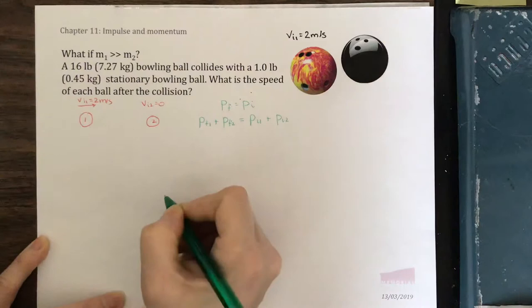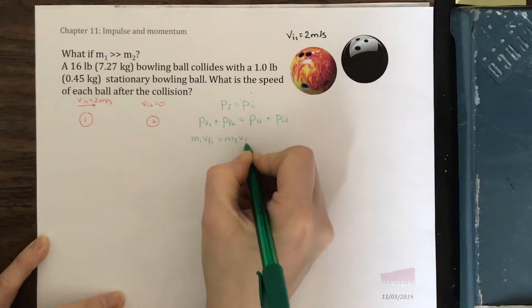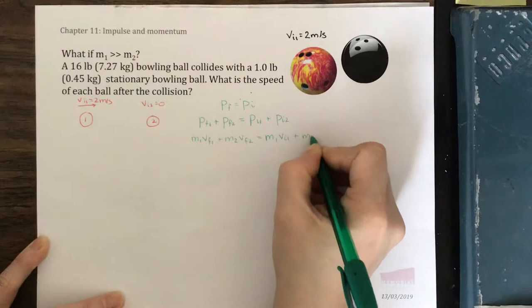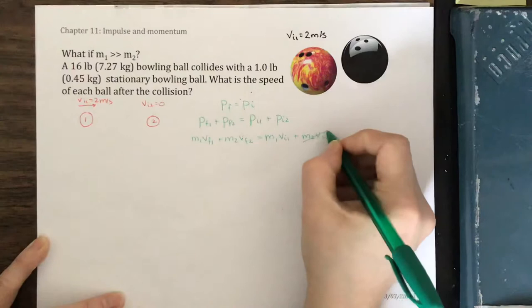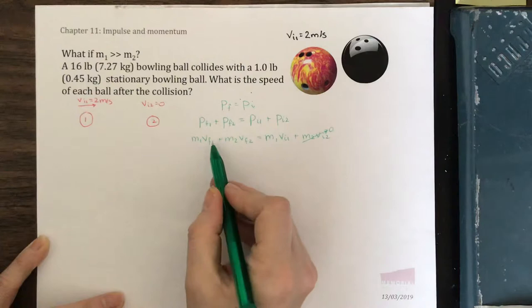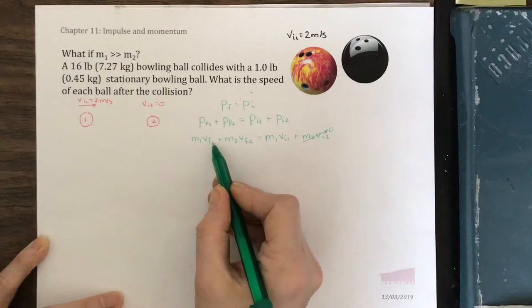We know that momentum is mass times velocity. We know that ball 2 is initially stationary, so the initial momentum is 0. We see here that we have two unknowns, vf1 and vf2, so we're going to need to use a second equation. Let's solve this equation for vf1 in terms of vf2, and then we'll do a substitution after we write down the kinetic energy equation.